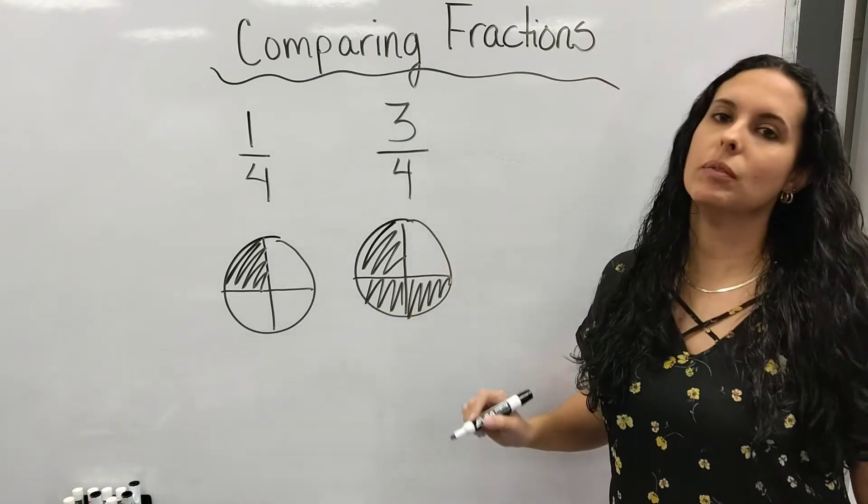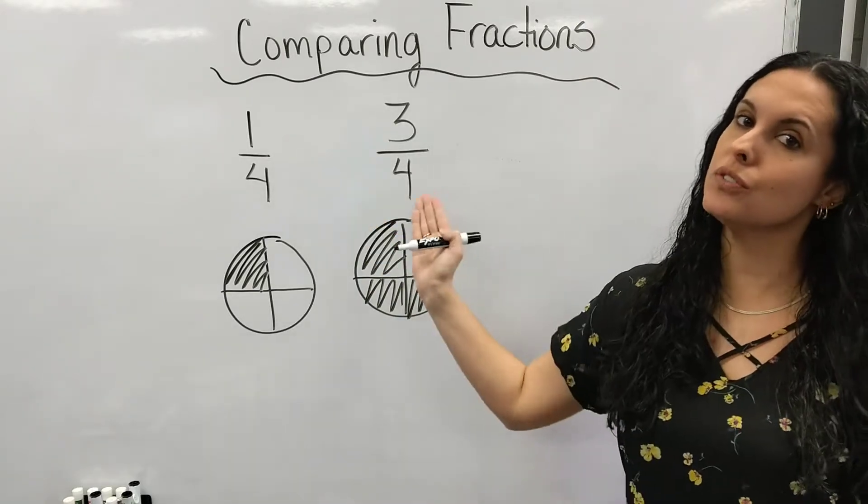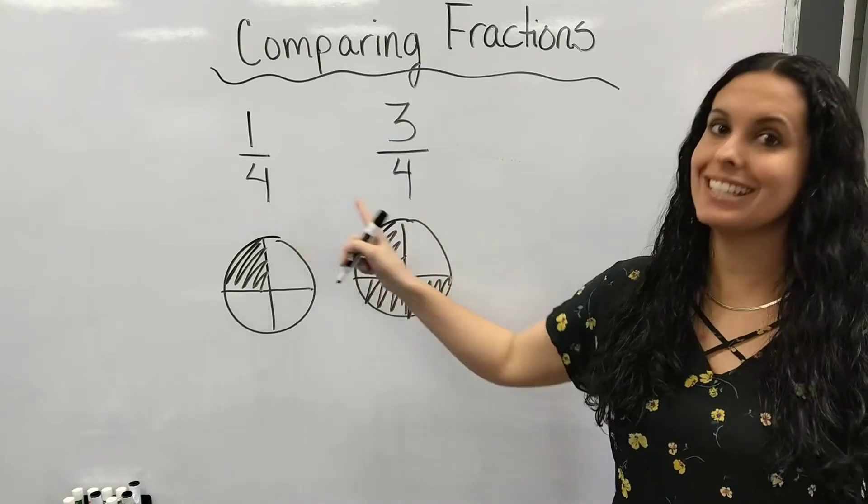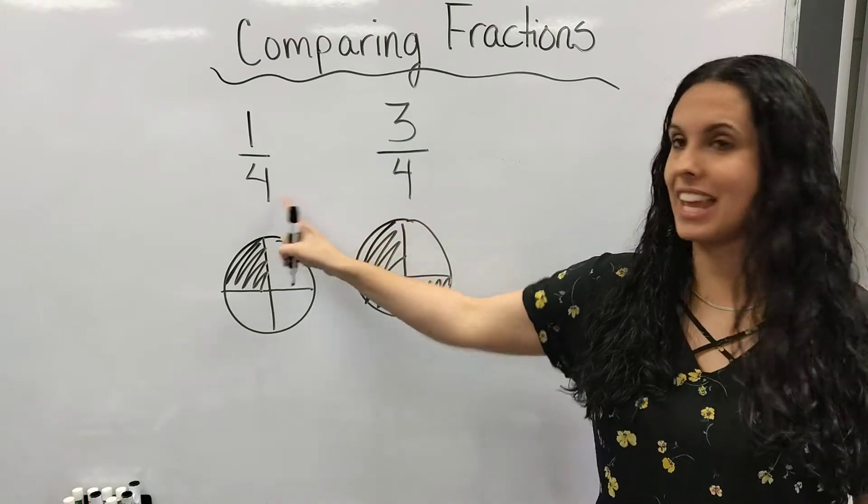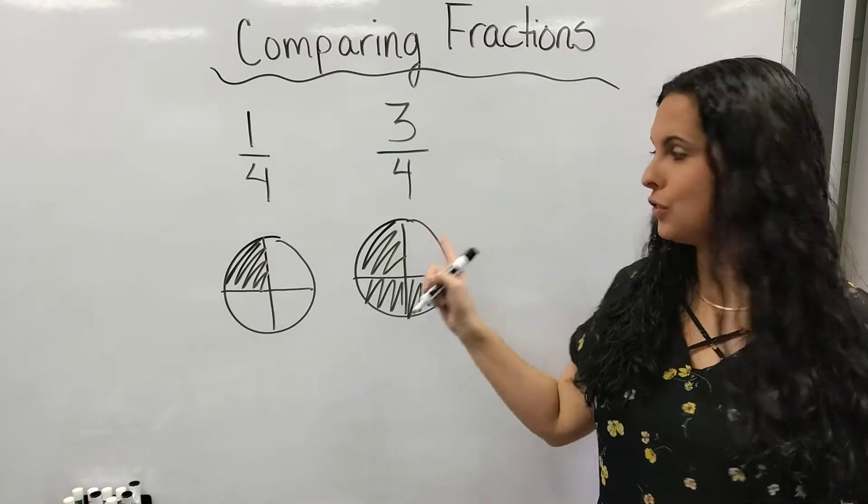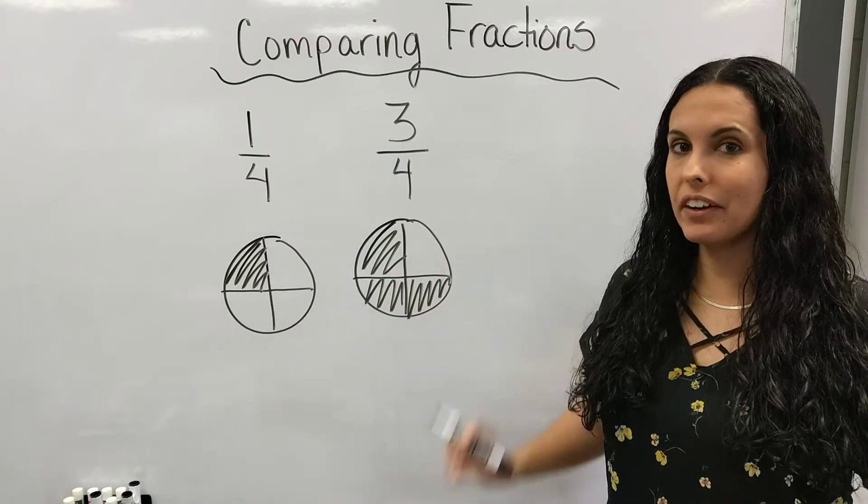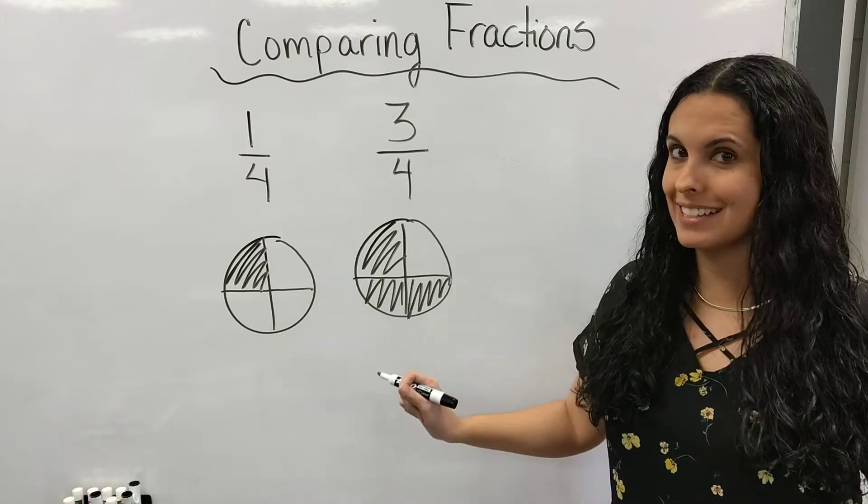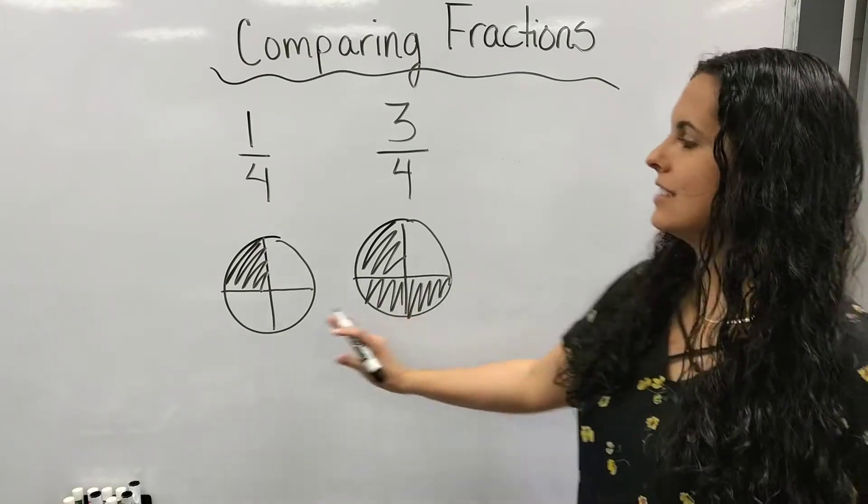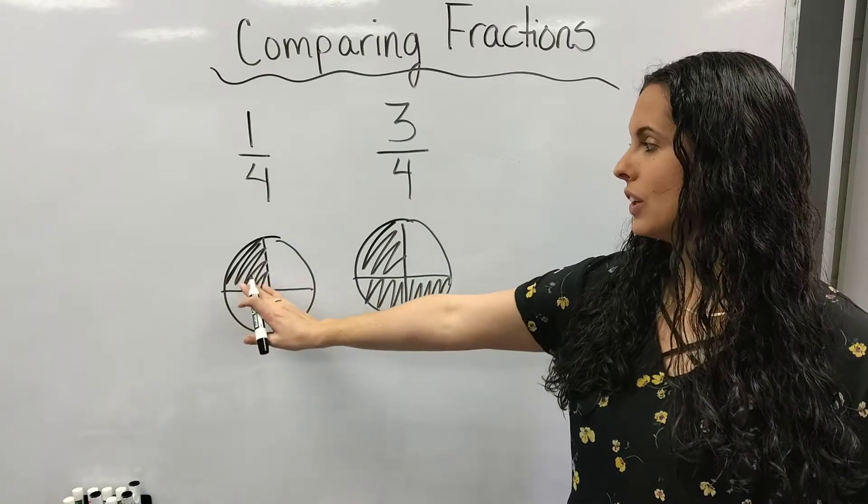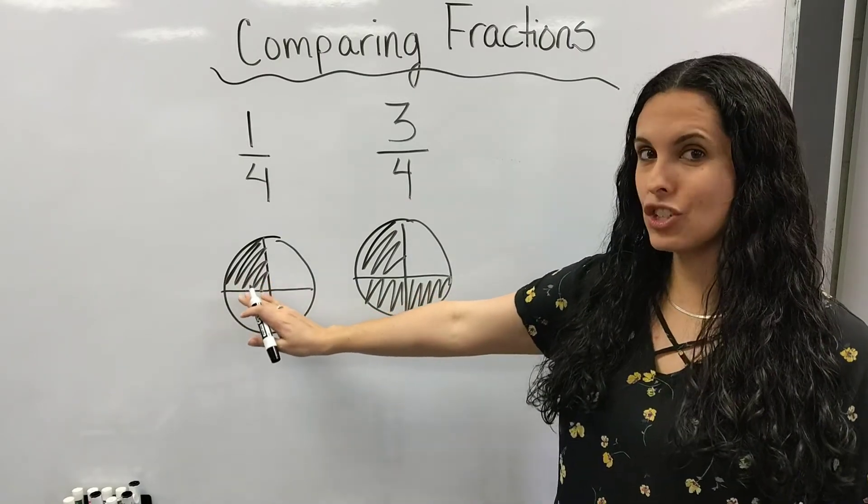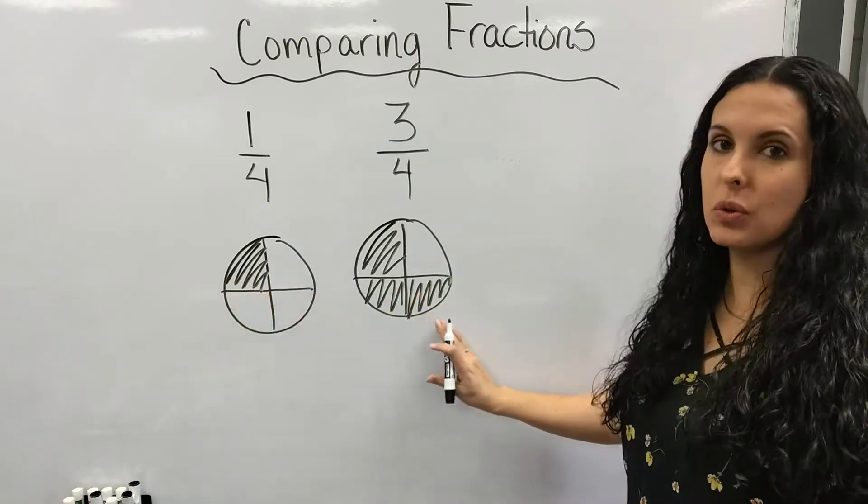So now I'm comparing these two fractions with like denominators. They have the same denominator. It's both a four. That means when I compare them, I'm comparing equal pieces. So I can see that one-fourth is less shaded than three-fourths.